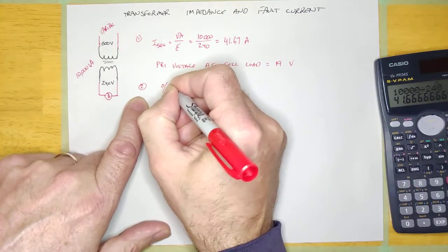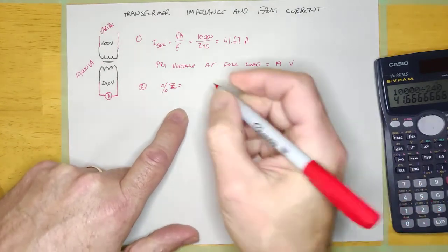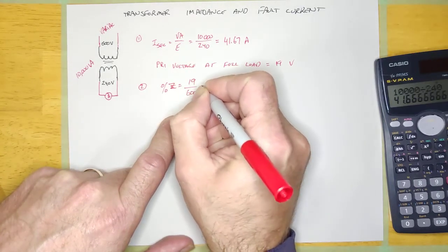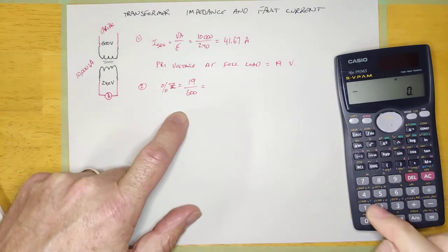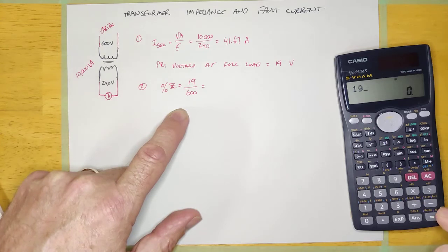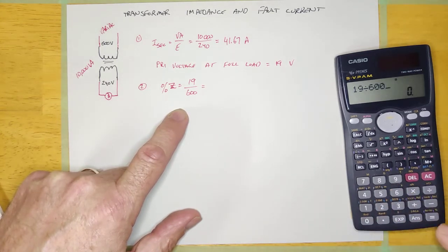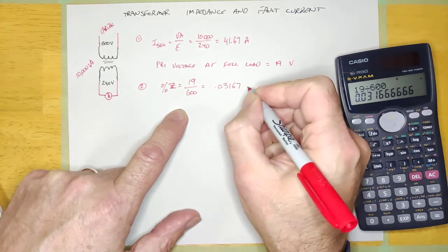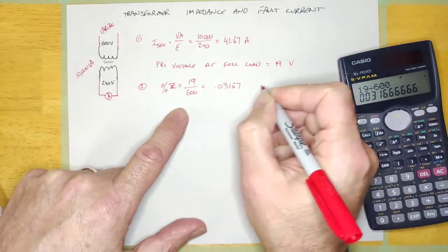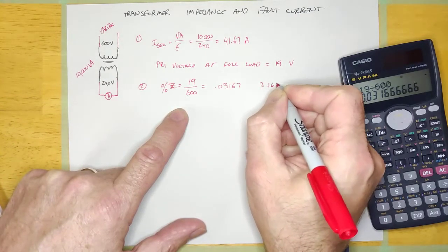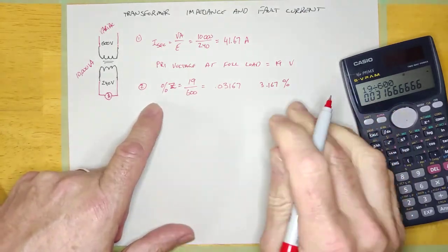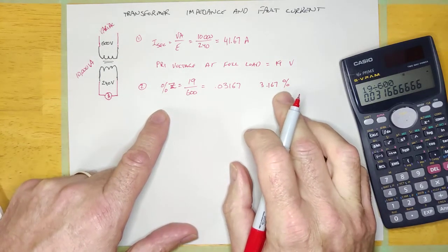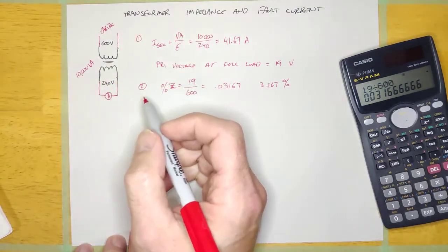After you've done that, you now have enough information to calculate the transformer's percent impedance. Because the percent impedance, percent Z, if you look at your notes, is the measured voltage over the rated voltage of the primary. So it would be the 19 volts that it took to get this thing to run at full current under short circuit conditions divided by the rated primary voltage. And it comes to 0.03167, and we would multiply that by 100, and we would get 3.167%. So the percent impedance for this particular transformer is 3.167%.